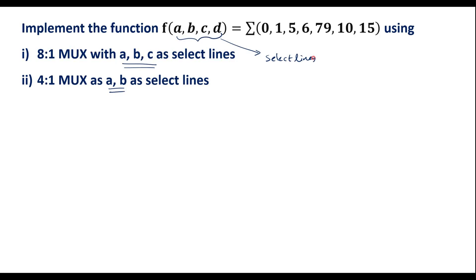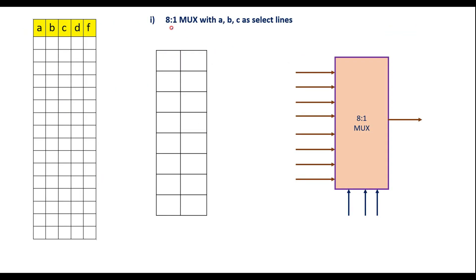In the first case we use an 8-to-1 MUX where A, B, C are the select lines. Since A, B, C, D are the four variables and only A, B, C are used as select lines, D will be used as the data line.